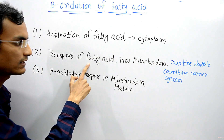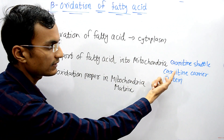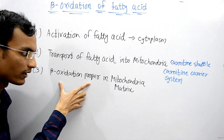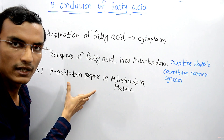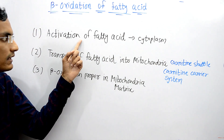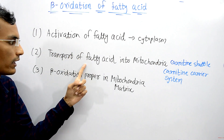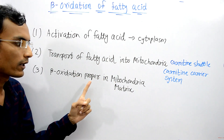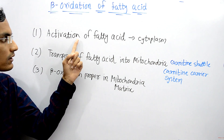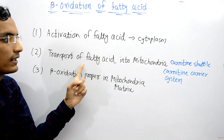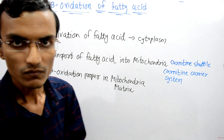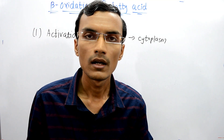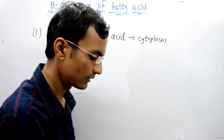Once the fatty acid molecule is transported by the carnitine shuttle inside the mitochondrial matrix, the process of beta oxidation proper can take place and the fatty acid molecule is oxidized. This video covers the first step — activation of fatty acid. The next video will cover transport of fatty acid into the mitochondria, and then beta oxidation proper in the mitochondrial matrix.